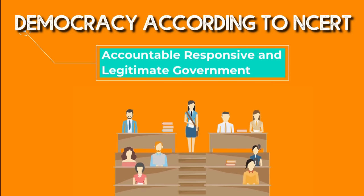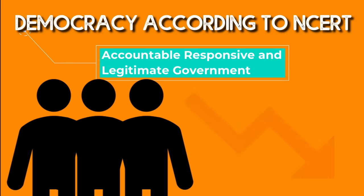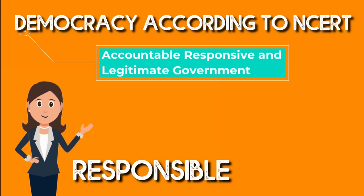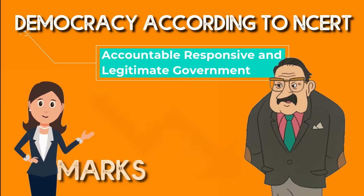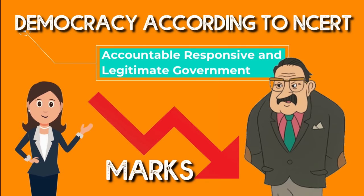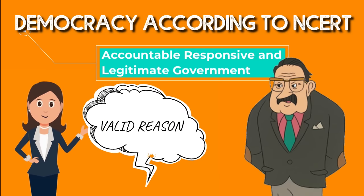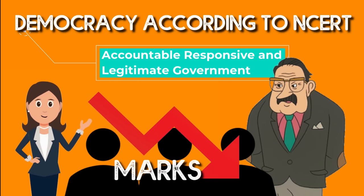Suppose I am an assistant teacher. There is an exam, and more children score low marks. In this situation, I am responsible to the principal — why are the children's marks being reduced? I have to give a valid reason for it.